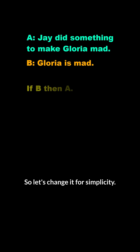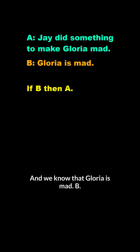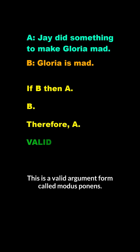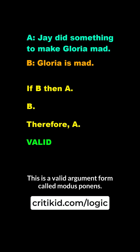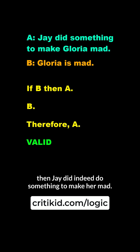So let's change it for simplicity: if Gloria is mad, then J did something to make Gloria mad. And we know that Gloria is mad, B. From these premises, can we logically conclude A? We can. This is a valid argument form called modus ponens. So assuming Gloria's premises are true, then J did indeed do something to make her mad.